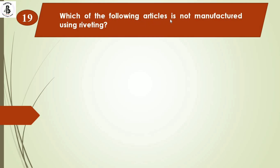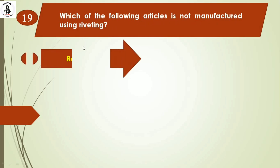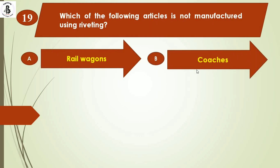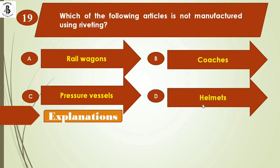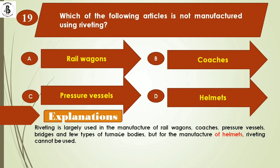Next question: which of the following articles is NOT manufactured using riveting? Option A: railway wagons. Option B: coaches. Option C: pressure vessels. Option D: helmets. Rivets are largely used for railway wagons, coaches, pressure vessels, bridges, and some furniture bodies as permanent joints. However, riveting is not used for helmets. So the right answer is option D.